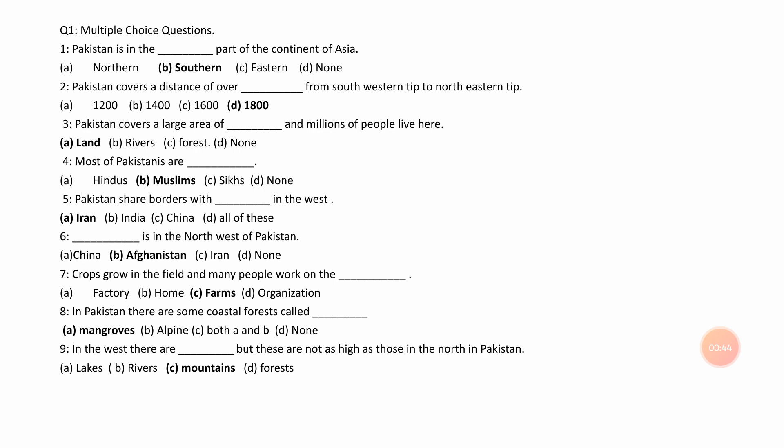Number 4. Most of Pakistanis are ___. A. Hindus, B. Muslim, C. Sikh, D. None. Answer is D. Muslims.